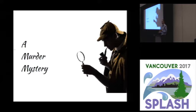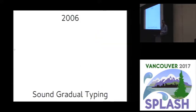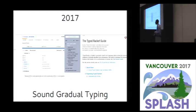So I want to start with a murder mystery, thinking about the death of sound gradual typing. Now in 2006, we started sound gradual typing and Jeremy and I published some papers. But today there's reasonably widely used academic systems, including one that I built on Typed Racket, that people actually use to do gradual typing.